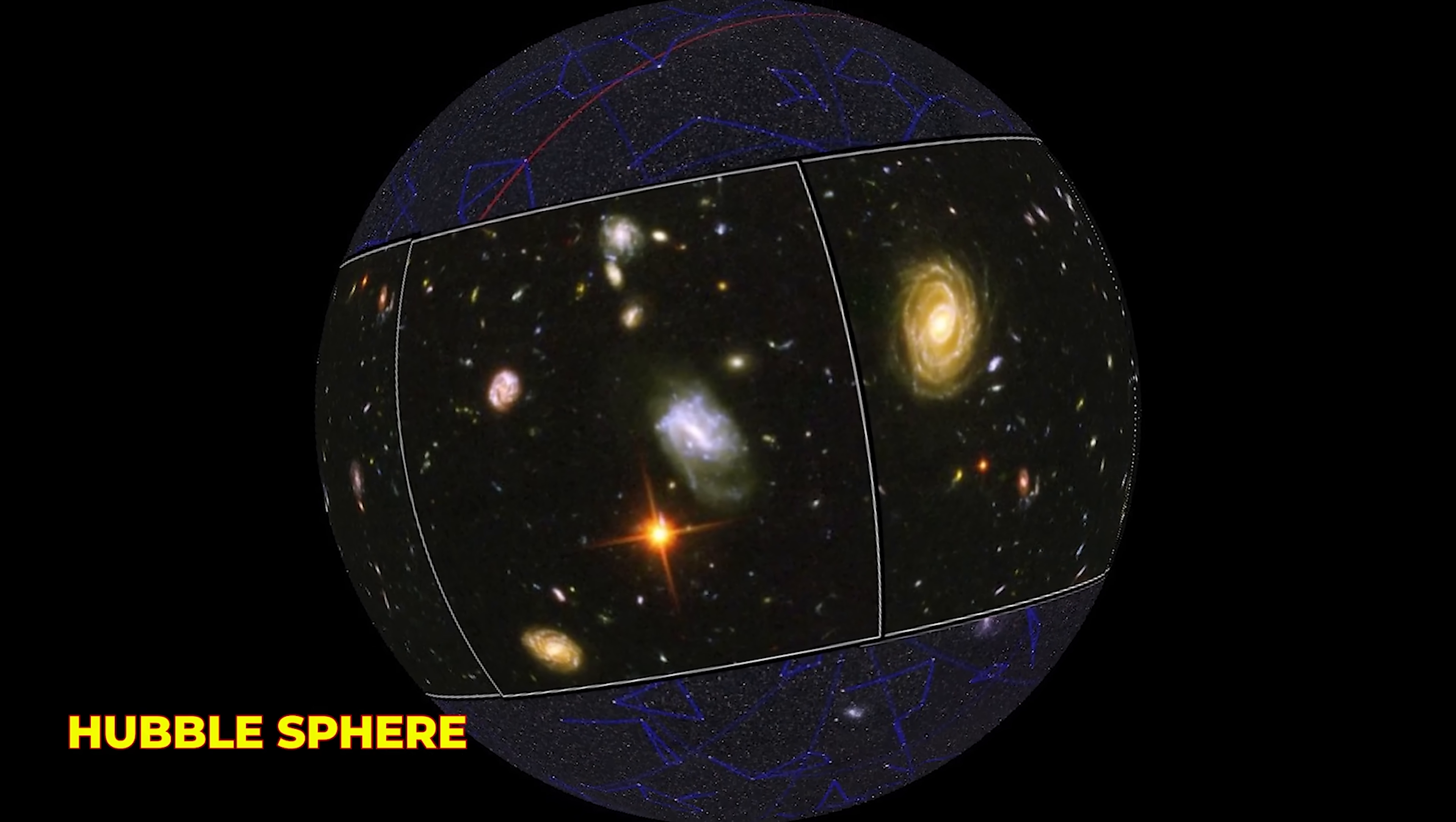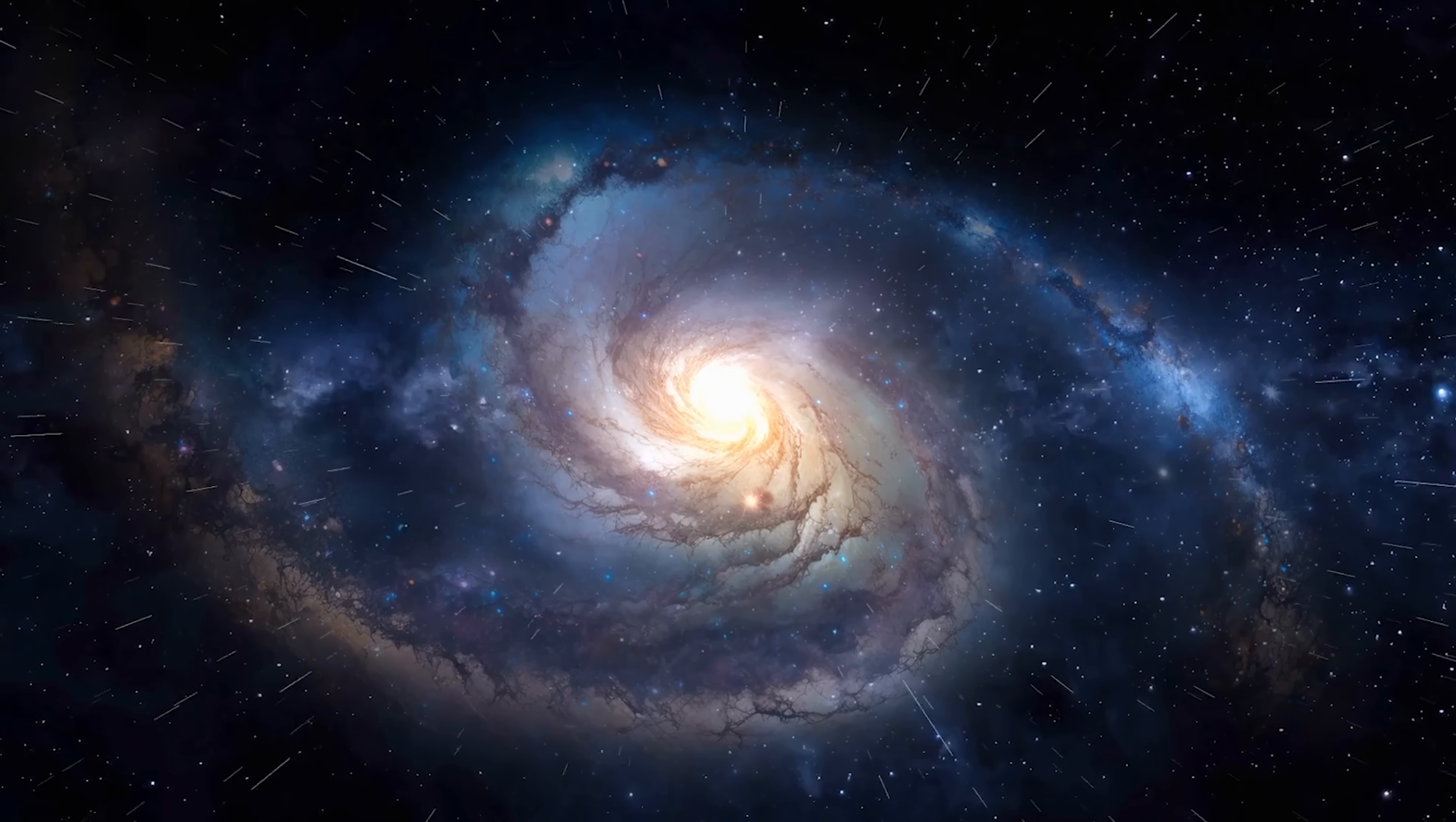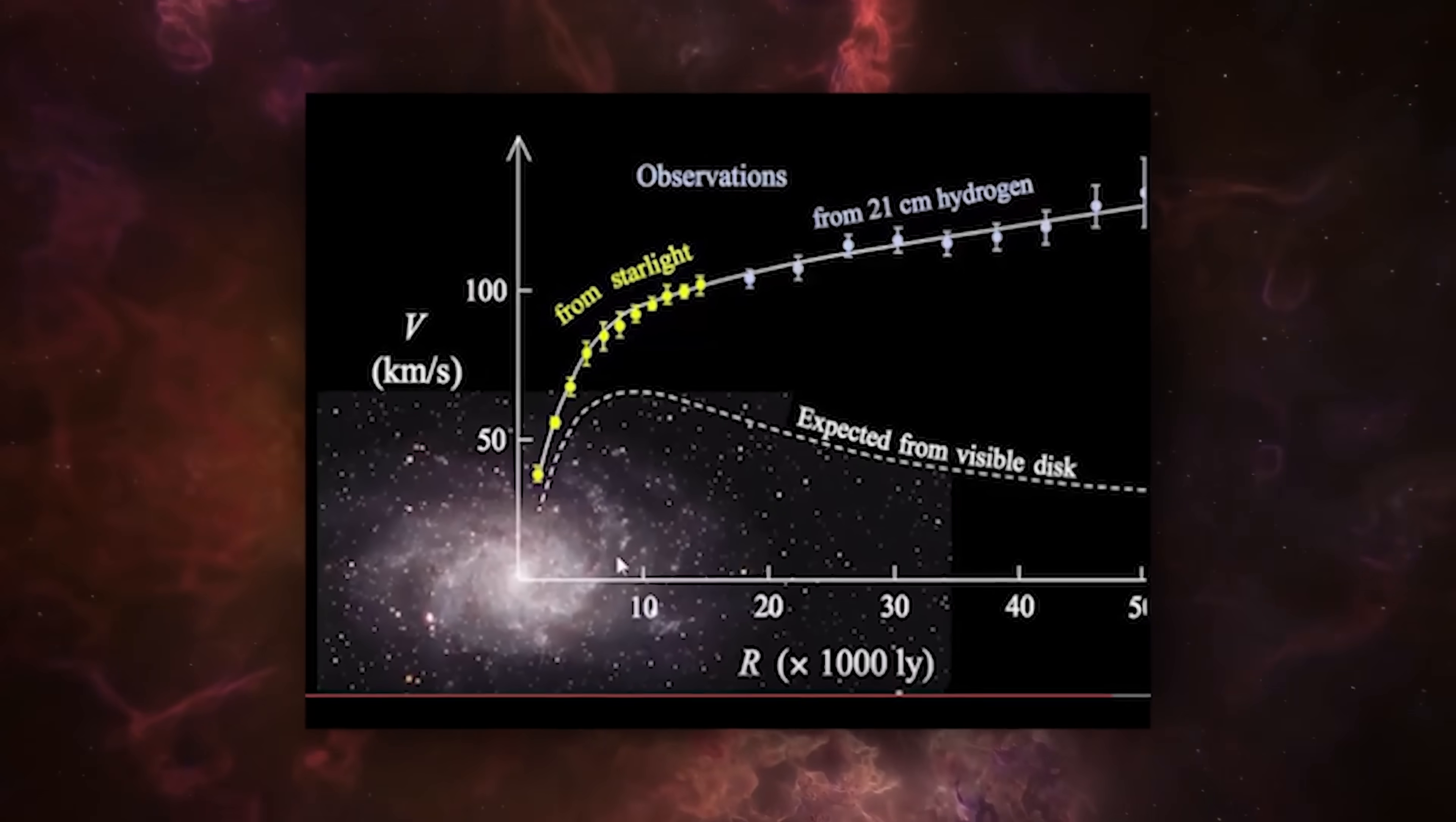Scientists have termed this region the Hubble Sphere, which marks a boundary within the cosmos where galaxies beyond that limit are receding from us at speeds exceeding that of light due to the expansion of the universe. Intuitively, one might assume that we will never be able to perceive the light emitted from these distant galaxies. Surprisingly, this assumption does not hold true. The light from galaxies located beyond the Hubble Sphere can still reach us, because the Hubble Sphere itself is expanding as a result of the accelerating expansion of space.